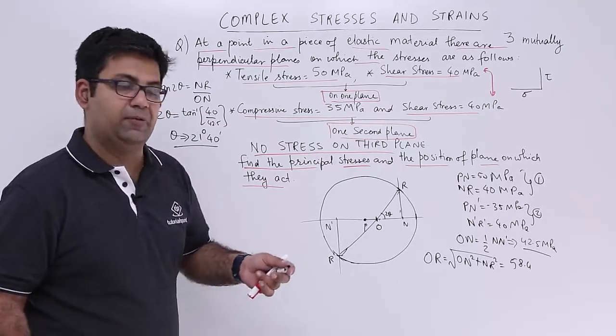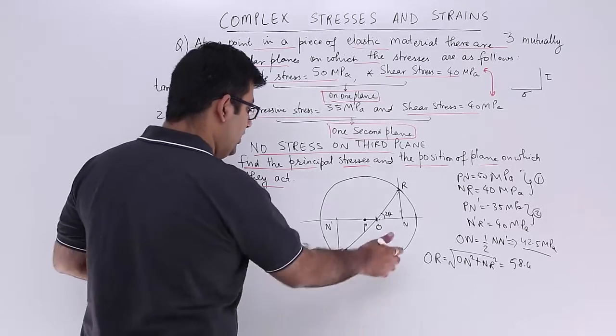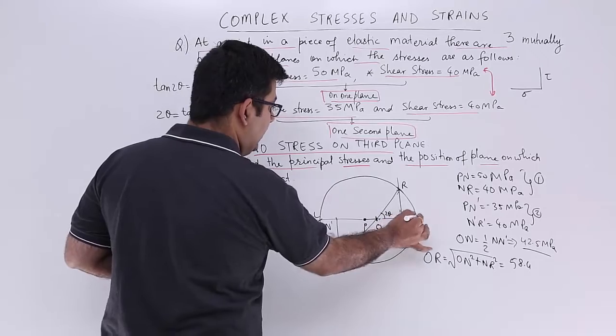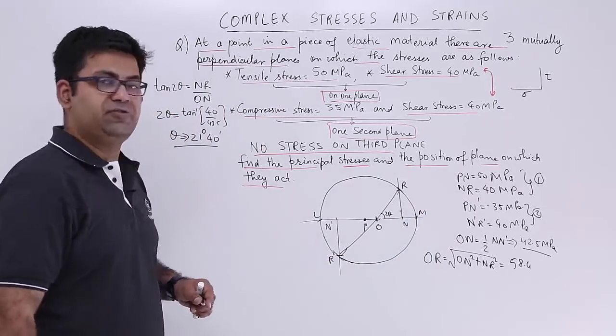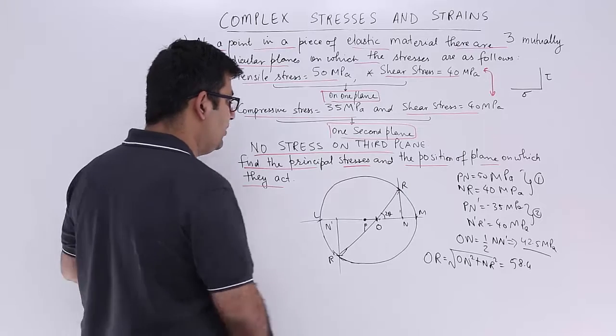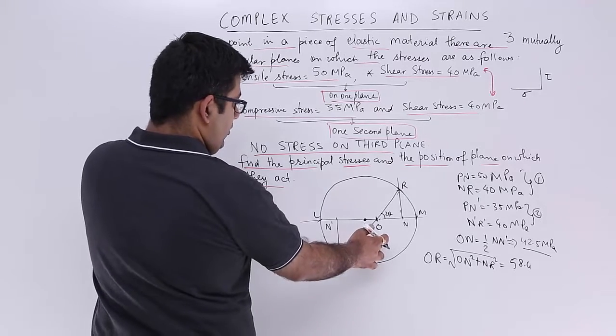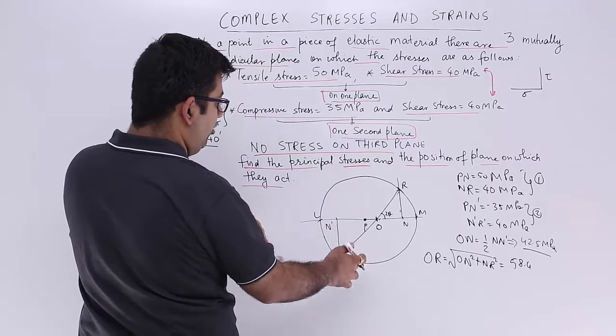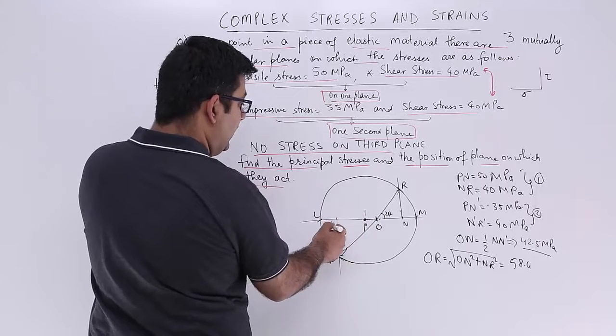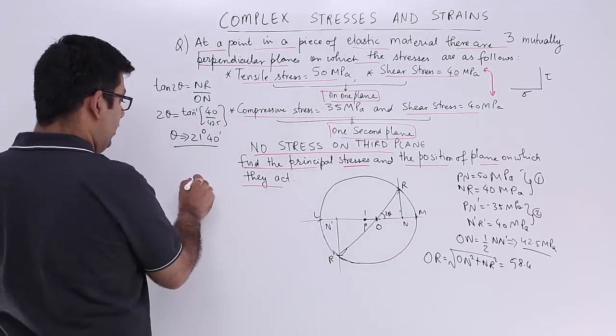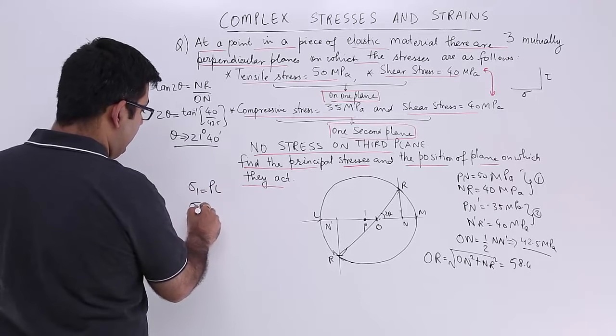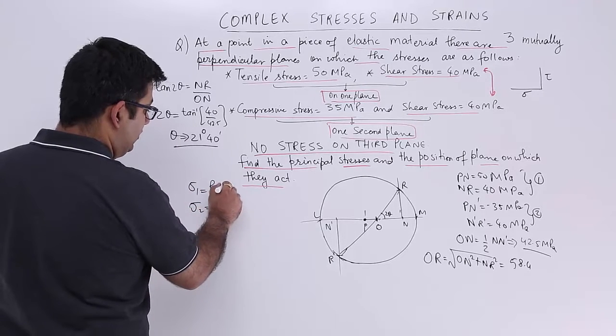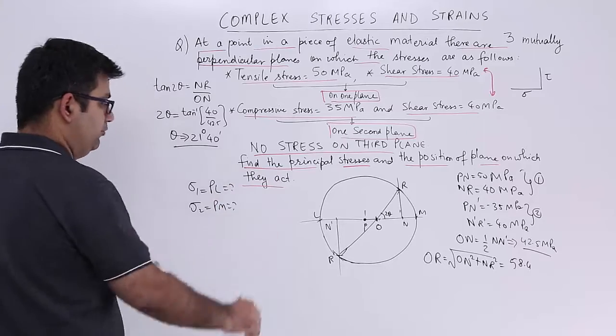So 21 degree 40 minutes is the position on the plane on which the principal stresses would act. Still we do not have the principal stresses. So this is point L and that is point M. The principal stresses are nothing but the distance PL and PM.